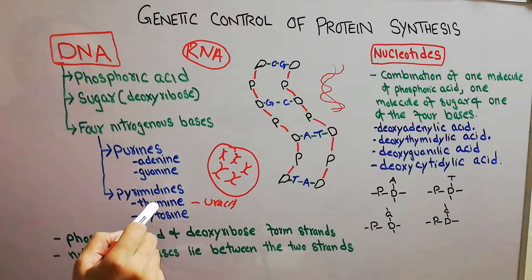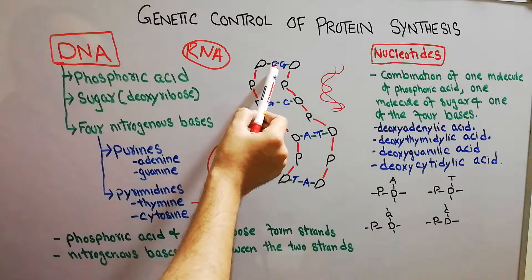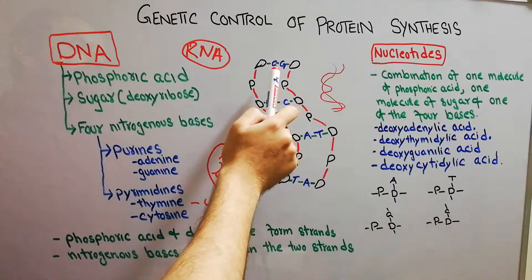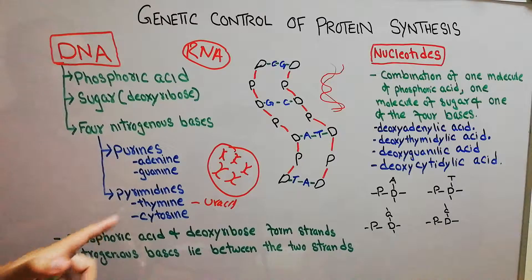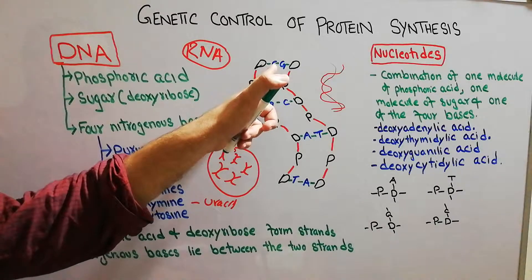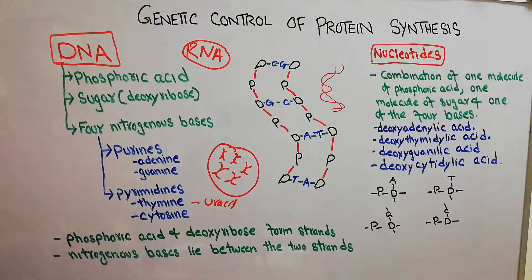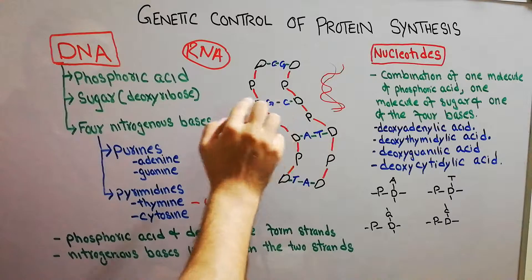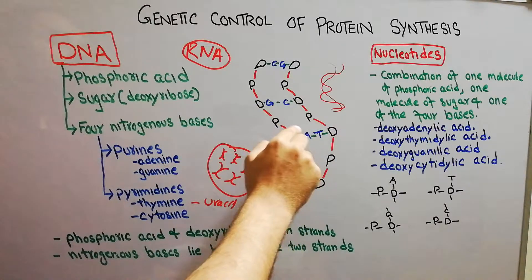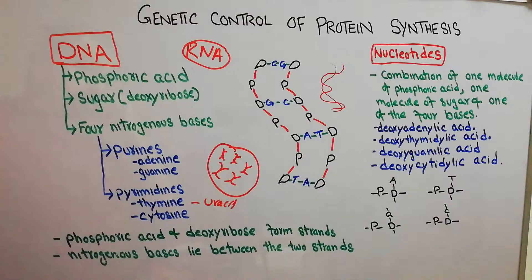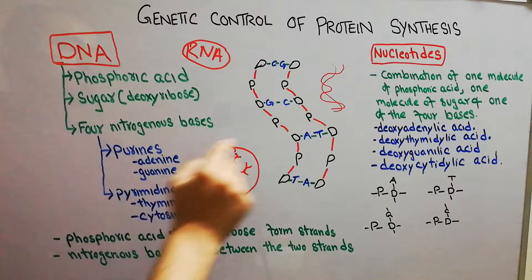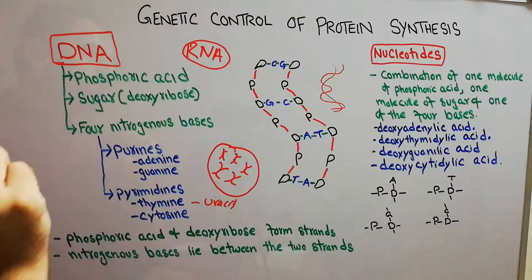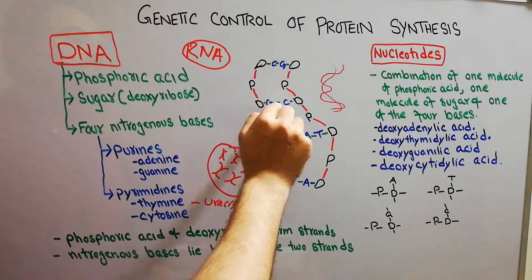There are four nitrogenous bases. One strand has a purine, and the corresponding base on the other helix will be a pyrimidine. For example, cytosine (C) bonds with guanine on the other helix. Similarly, guanine bonds only with cytosine — guanine cannot form a bond with thymine. Adenine cannot form a bond with cytosine; adenine bonds with thymine. These are hydrogen bonds — two hydrogen bonds between adenine and thymine, and three hydrogen bonds between guanine and cytosine.